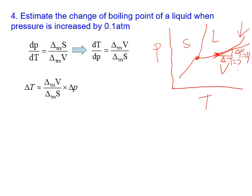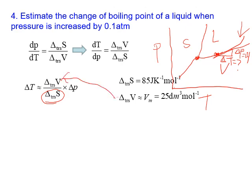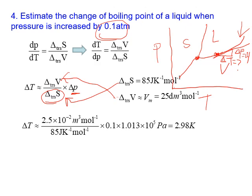We know delta S, the entropy of the phase transition, equals 85 J/K/mol by Trouton's rule, and delta V — liquid becoming gas — assuming ideal gas at room temperature is approximately 24 to 25 cubic decimeters per mole. Plugging everything in: delta V, delta S, and delta P = 0.1 atmosphere, the result is delta T approximately 2.98 kelvin. So if pressure increases by 0.1 atmosphere, the boiling point increases by about 2.98 kelvin.